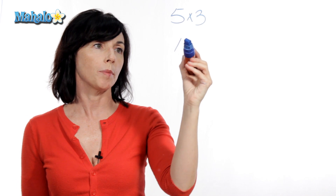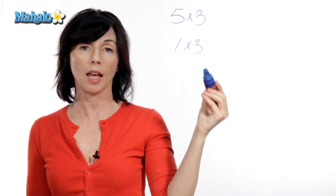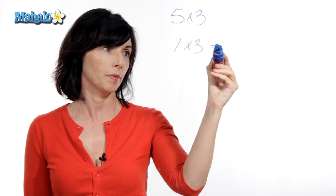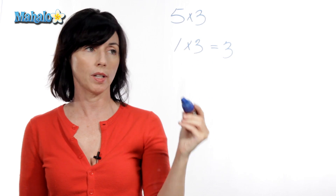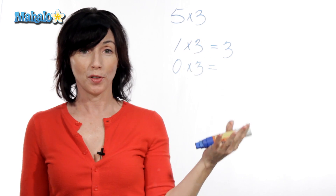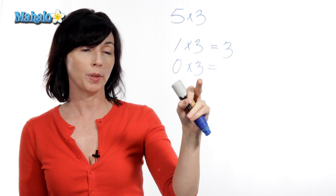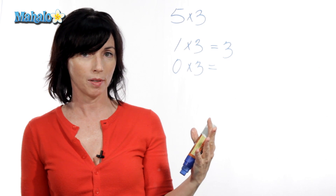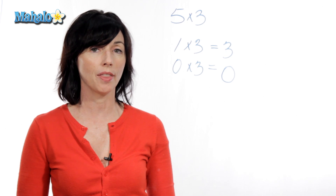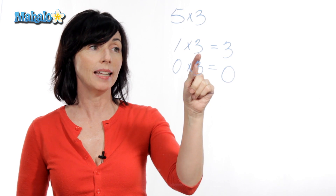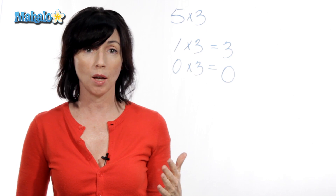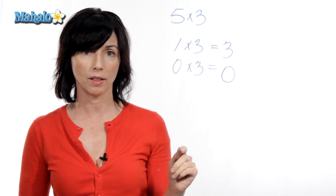So, what if you have one times three? Essentially, that means you're adding three to itself one time, which would just give you three. What about zero times three? Going by our first example, that means that we're adding three to itself zero times, which would just give us zero.